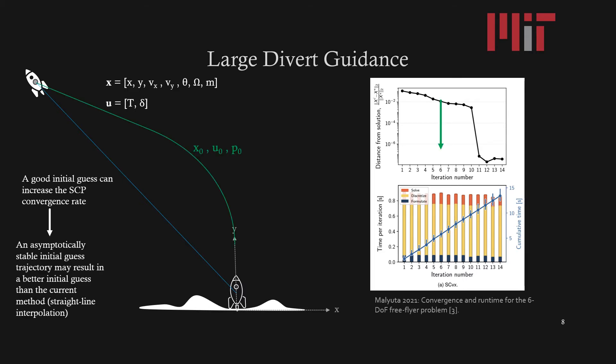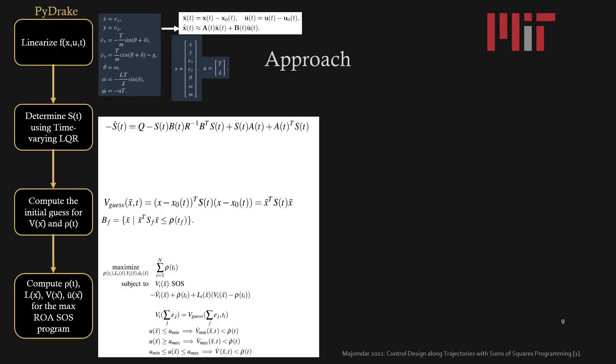In order to reduce the number of iterations required to converge to a solution, I propose to create a new initial guess strategy that no longer uses the currently implemented straight line interpolation method but instead utilizes an asymptotically stable initial guess strategy formulated using Lyapunov theory.